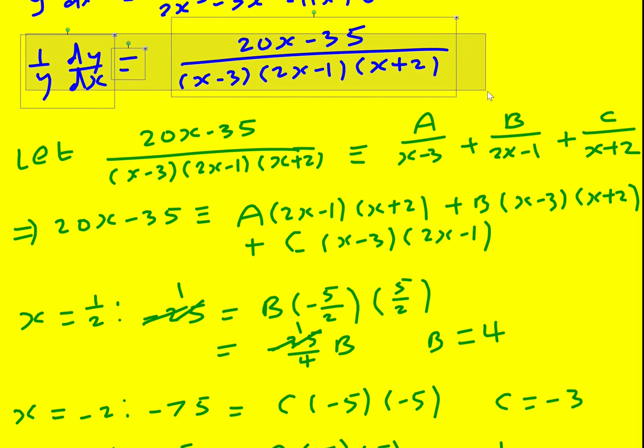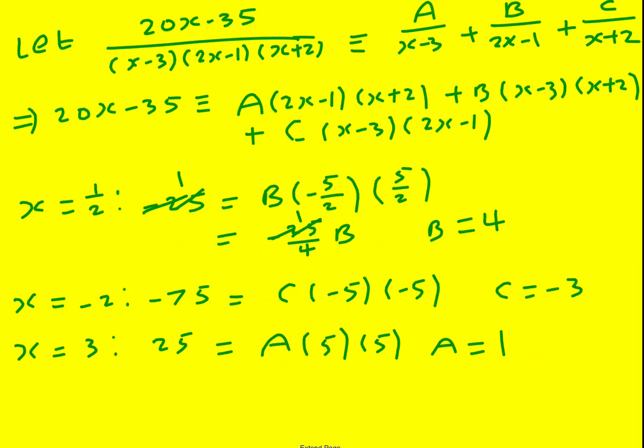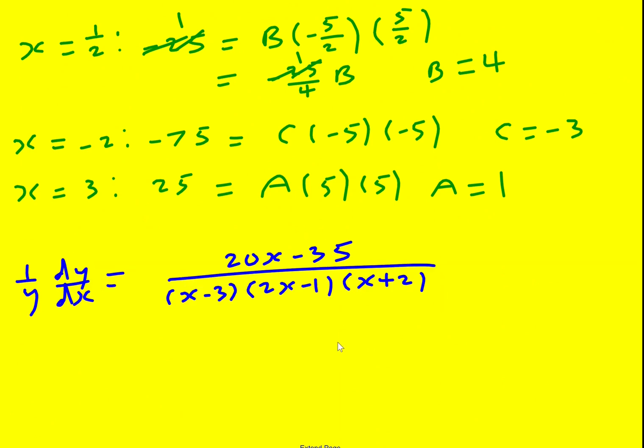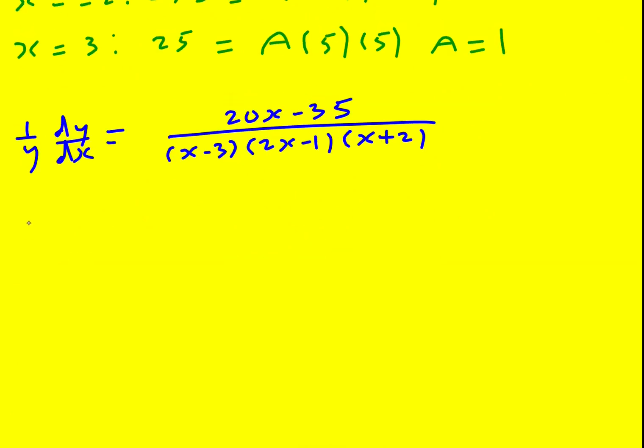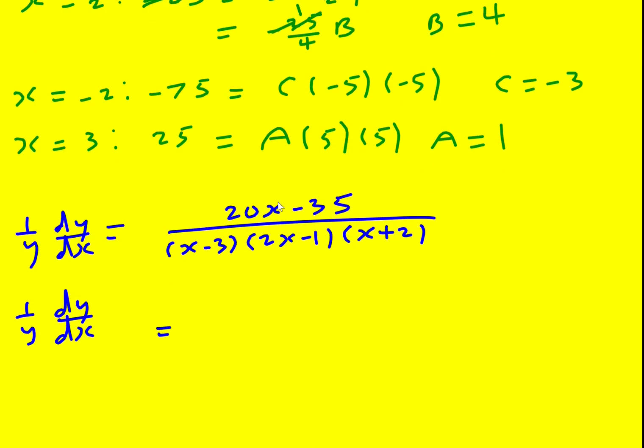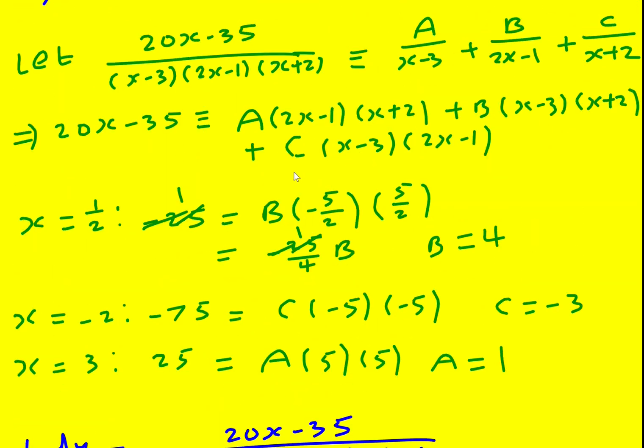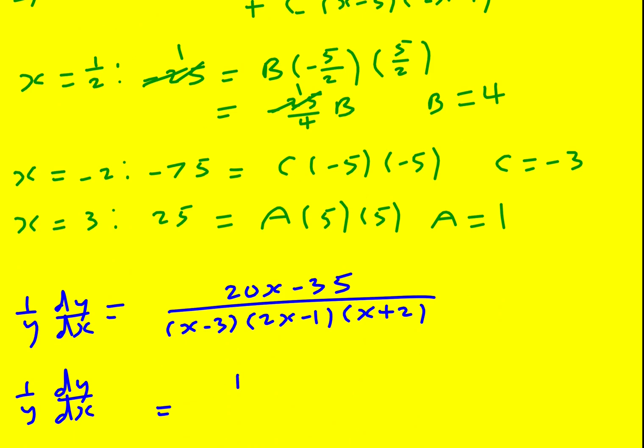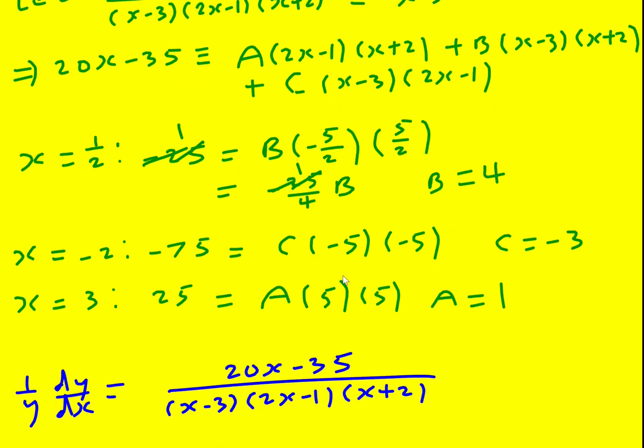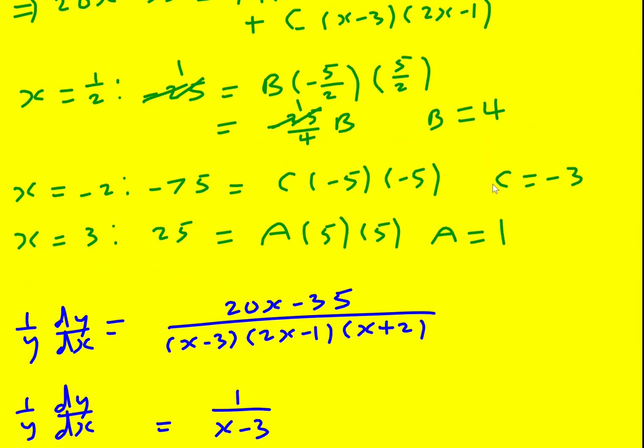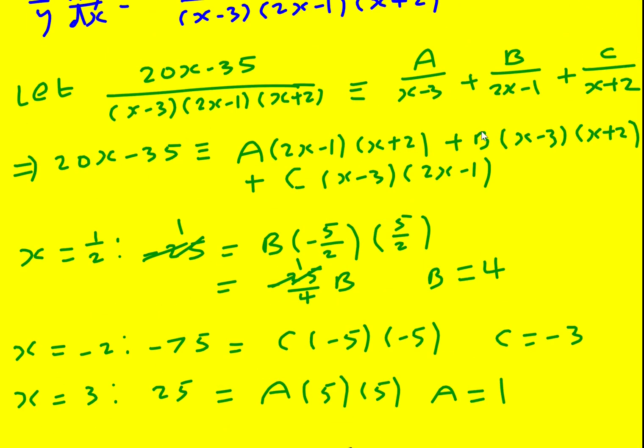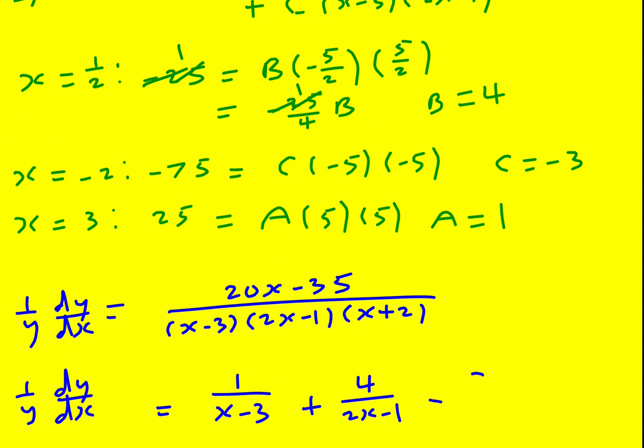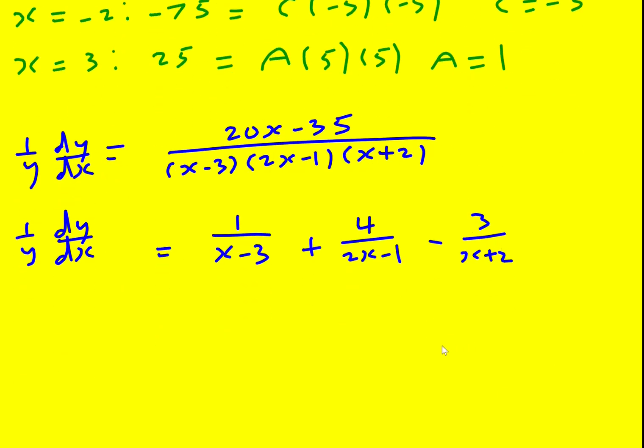Right, so we can take this thing here. That is in a lot better shape than the very starting equation, but we can get it even better. So 1 over y dy by dx is going to equal, oh I've lost it up here haven't I? But 1 over x minus 3. And then for b we had b over 2x minus 1, so it's 4 over 2x minus 1. And finally it was plus c over x plus 2, so it's going to be minus 3 over x plus 2 because c is minus 3. You can either add on minus, or you can just subtract it like that.